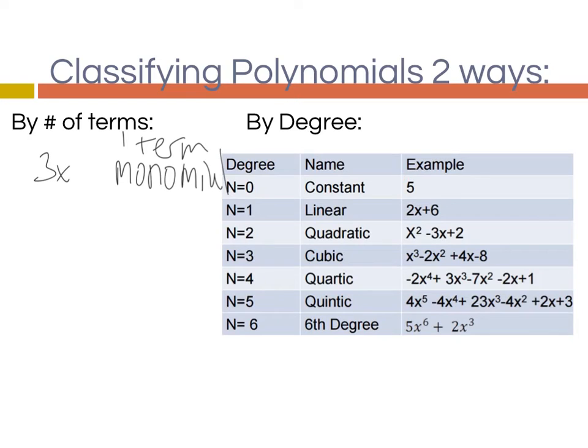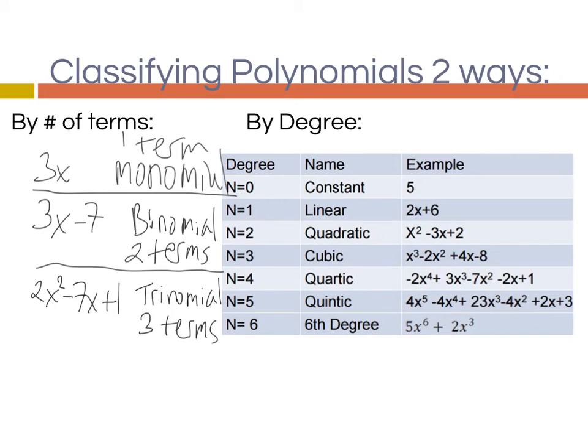That's a monomial. The next one would be a binomial, which has two terms. So a binomial has two terms. And then, lastly, we have a trinomial. That's the last of our specific names by number of terms. So a trinomial has three terms. And there's lots of different examples for trinomials. You just have to have three terms. So that's the first part of classifying them.